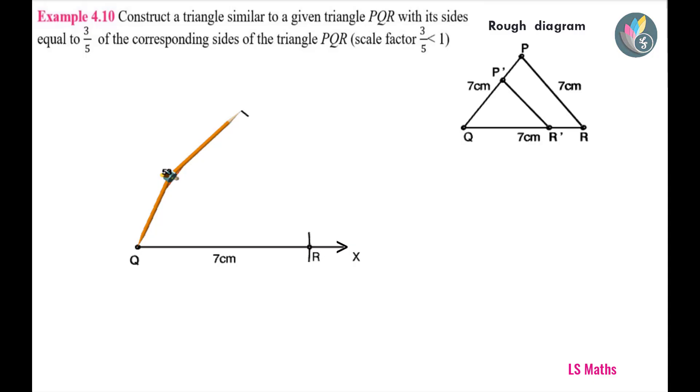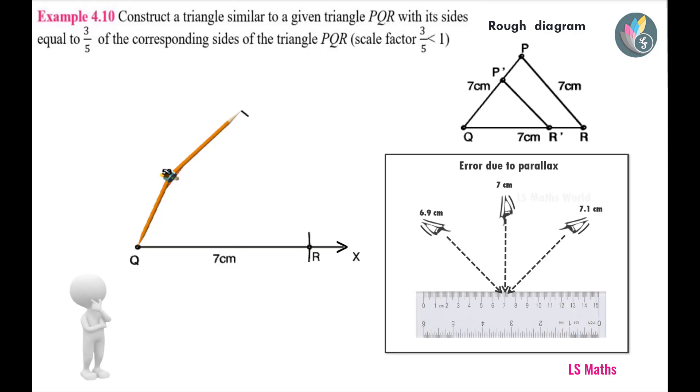Mark the point of intersection as R. At this step, you may wonder why we are doing like this, instead of taking directly 7 cm on scale. Plastic scale is a transparent medium. So, in order to avoid error due to parallax, we follow this practice.